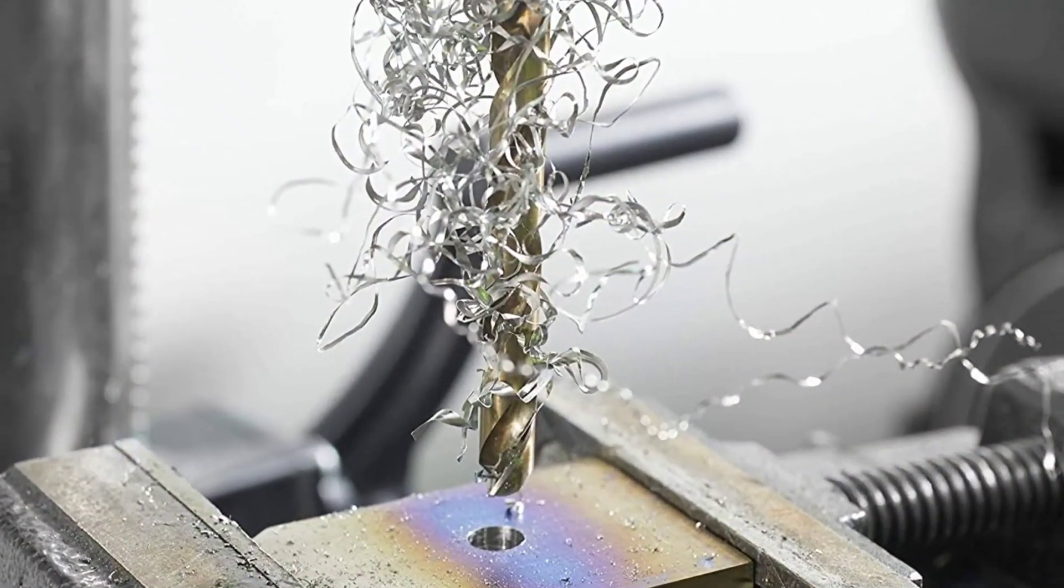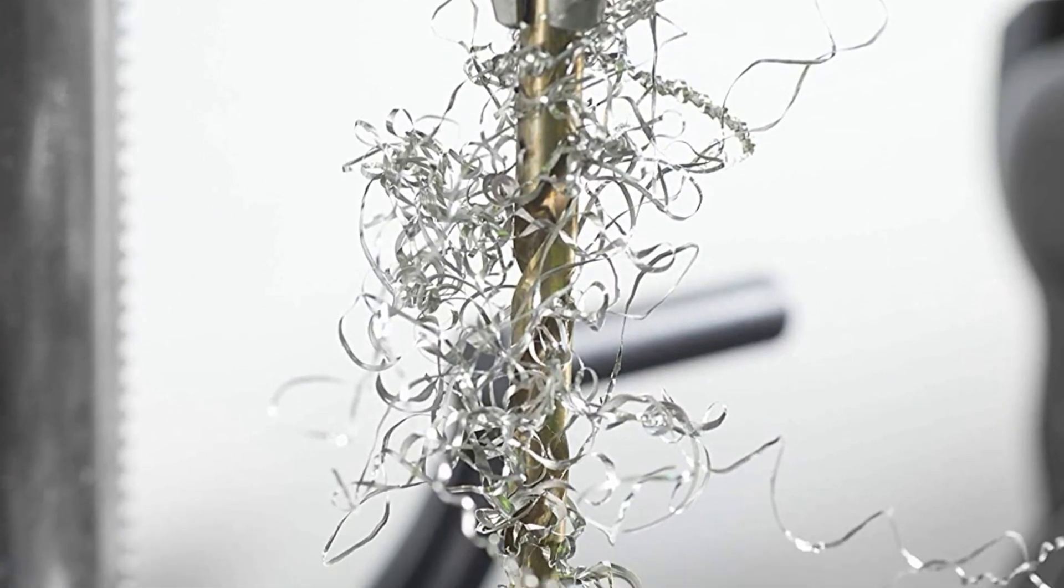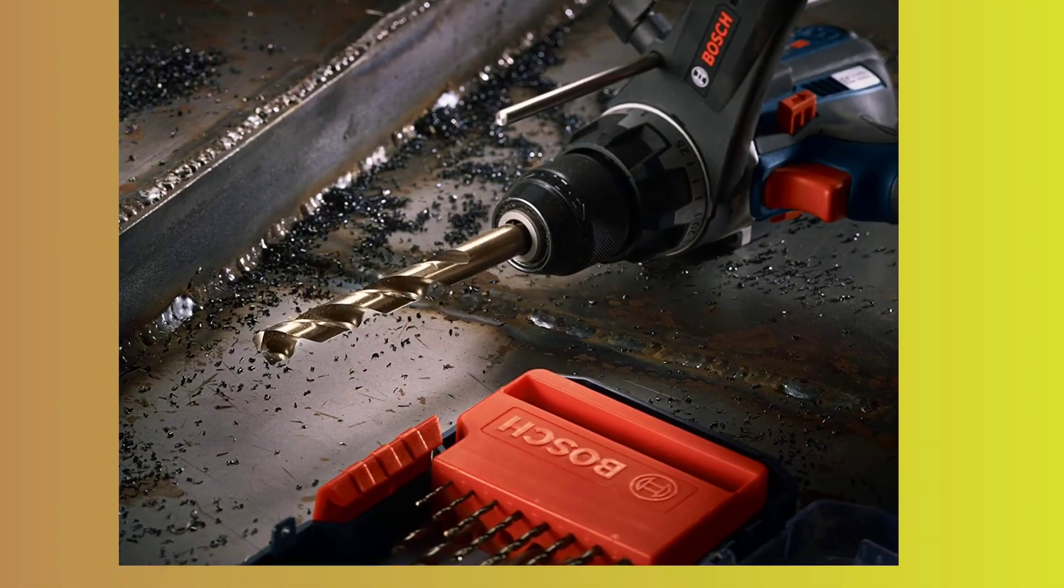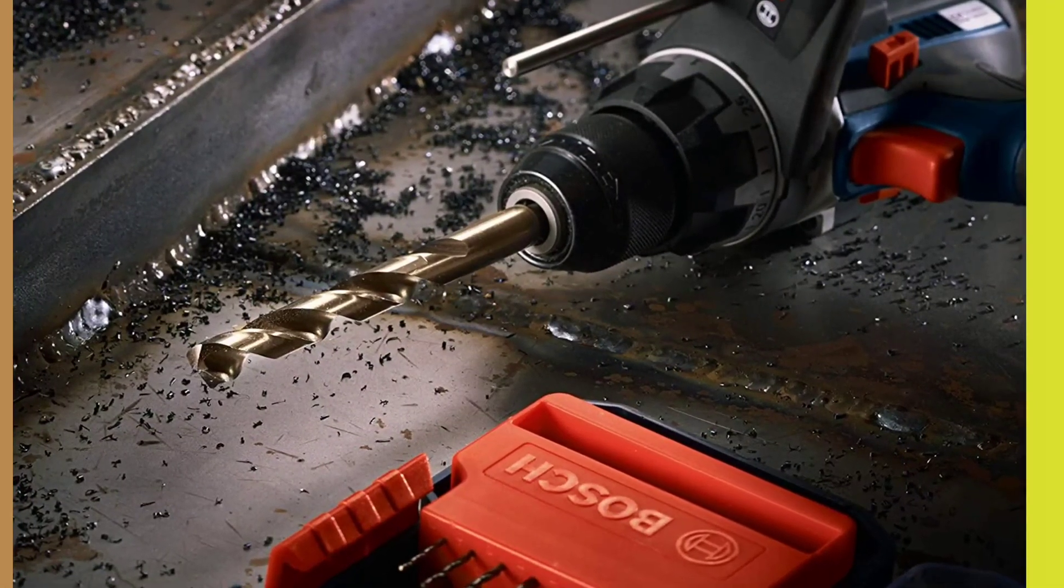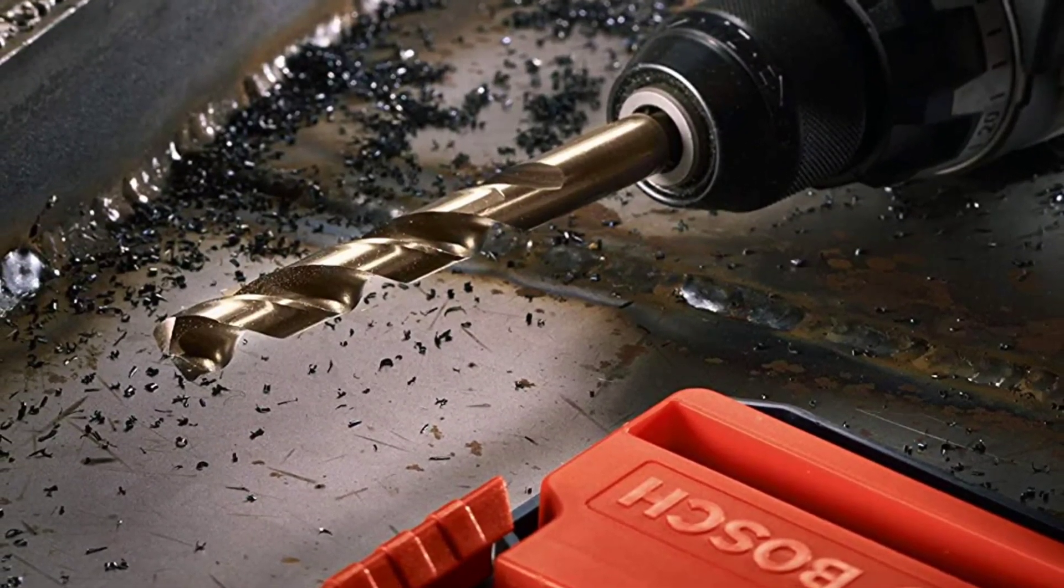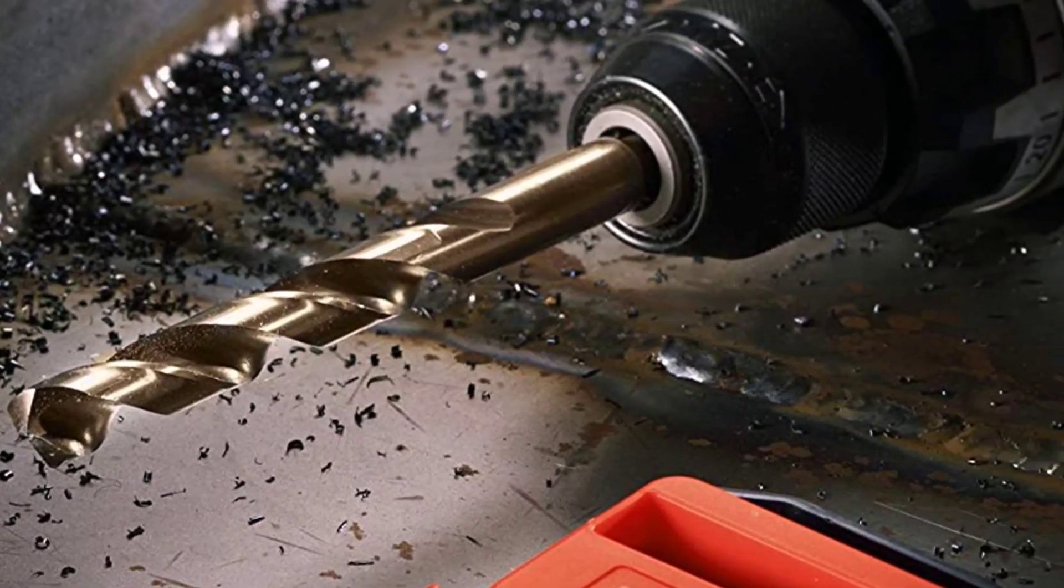This type of steel is known for its ability to withstand high temperatures, making it ideal for drilling through hard materials such as stainless steel and cast iron. Additionally, cobalt M42 steel is known for its exceptional hardness and wear resistance, which means these drill bits will last longer and maintain their sharpness longer than standard high-speed steel bits.